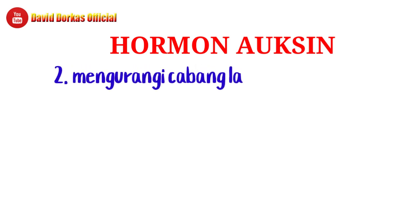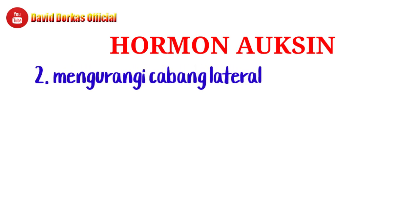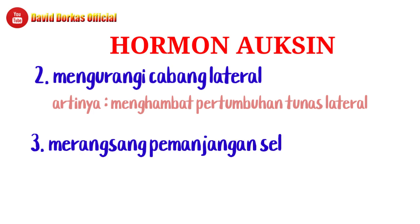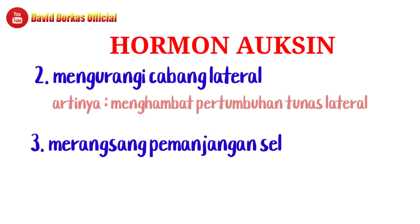Fungsi yang kedua adalah mengurangi cabang lateral. Fungsi ini berkaitan dengan fungsi pertama tadi, karena supaya dominansi apikal terjadi, pertumbuhan tunas lateral harus dihambat. Jadi supaya ujung tumbuh maksimal, maka pertumbuhan lateral dikurangi atau dihambat.